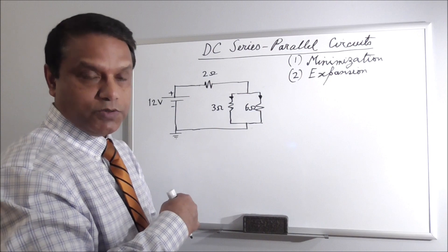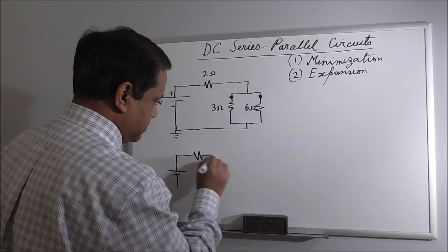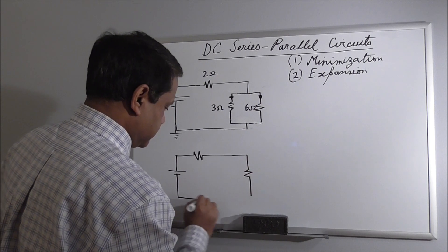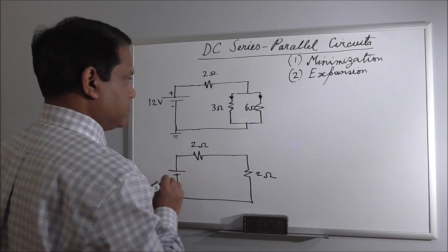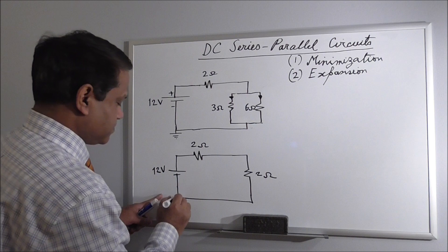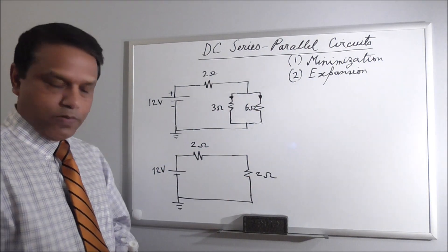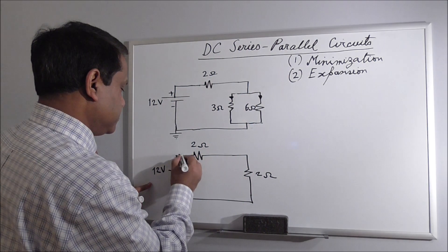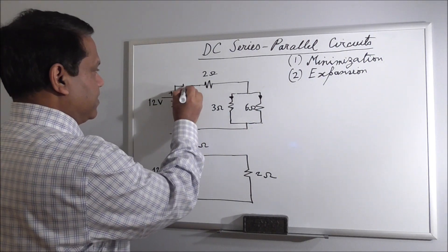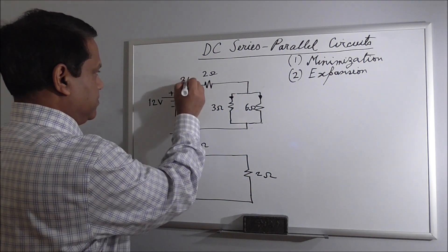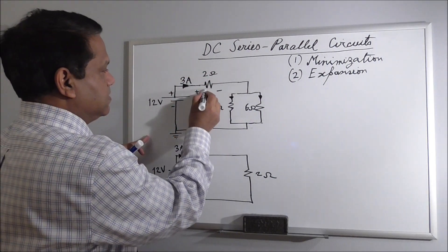And 18 by 9 is 2. So the new circuit will be 2 ohm, 2 ohm, and 2 ohm in series. Combining the two series 2 ohm resistors gives 2 plus 2, which is 4 ohm. That means the current here would be 12 by 4, which is 3 ampere. And if you put back 3 ampere here, this voltage will be 3 times 2, which is 6 volt.